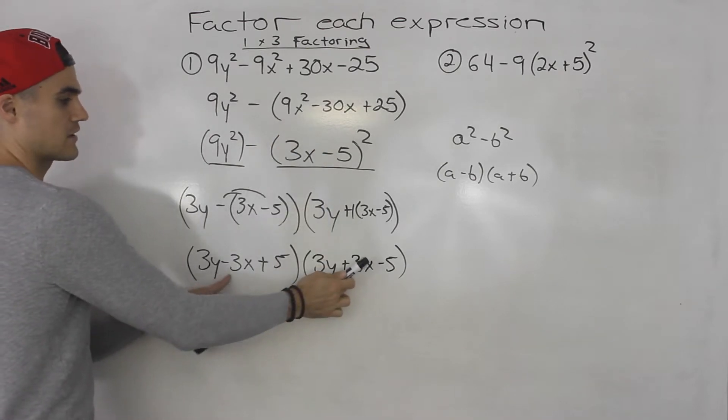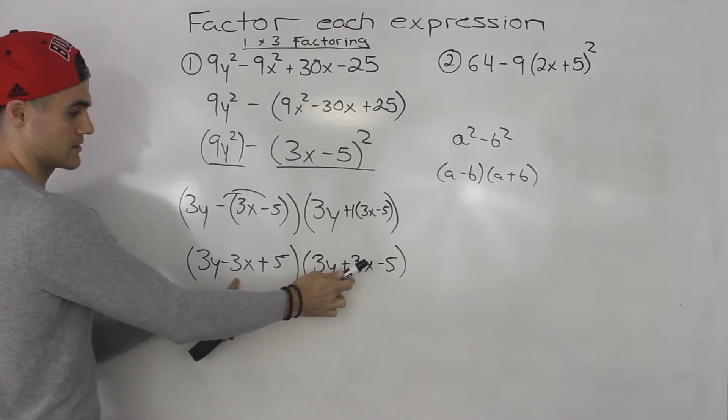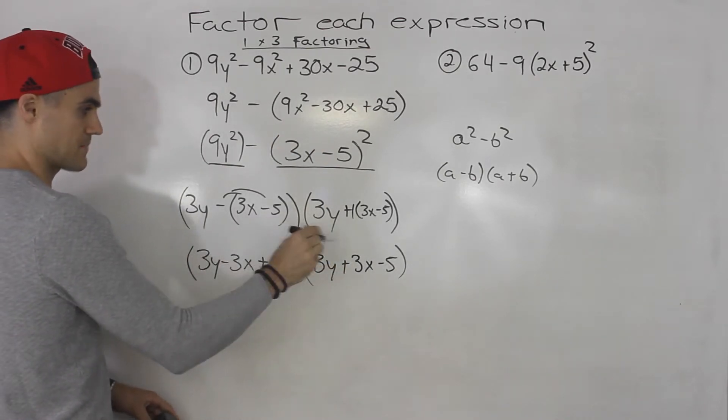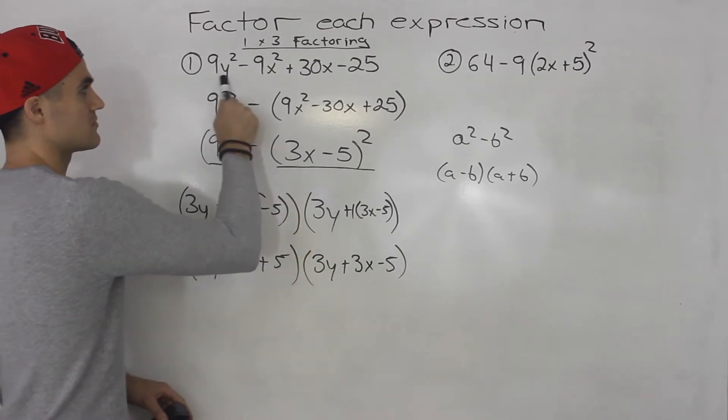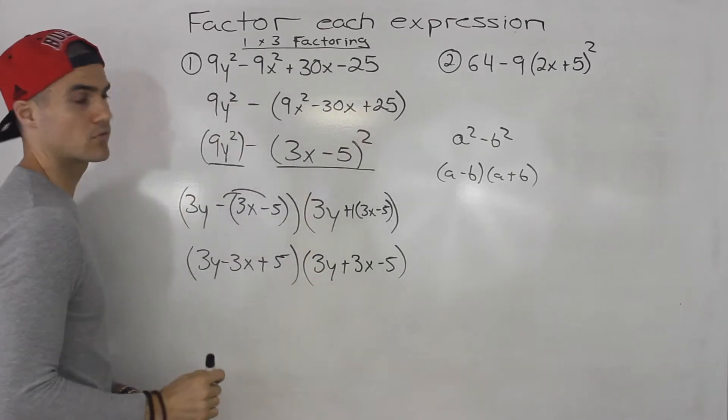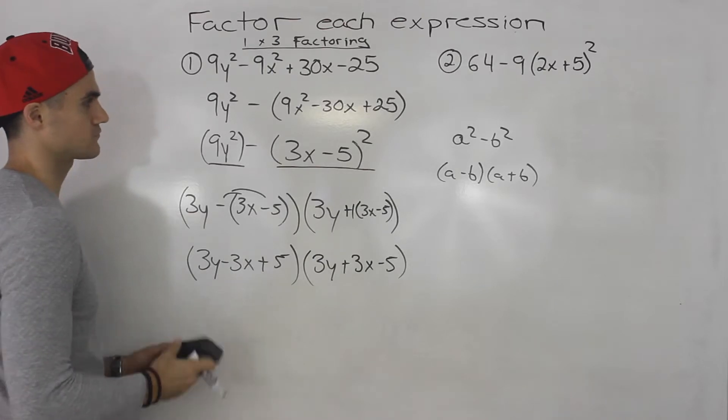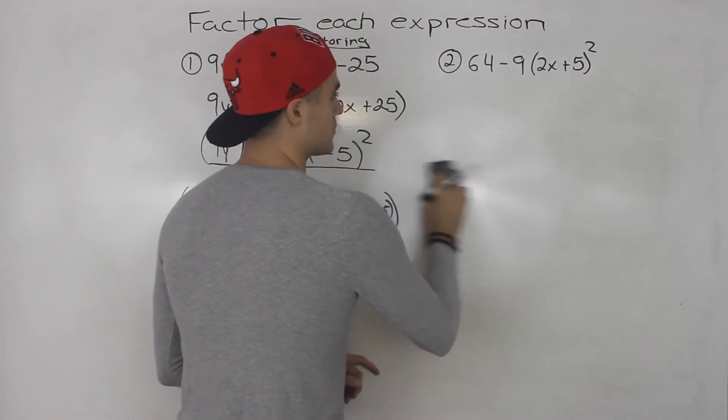So we took this, factored it into these two brackets. And you could check your answer if you were to expand all of this, foil it all out, simplify all the like terms, you would end up with that right there. Number two, we got 64 minus 9 bracket 2x plus 5 squared.